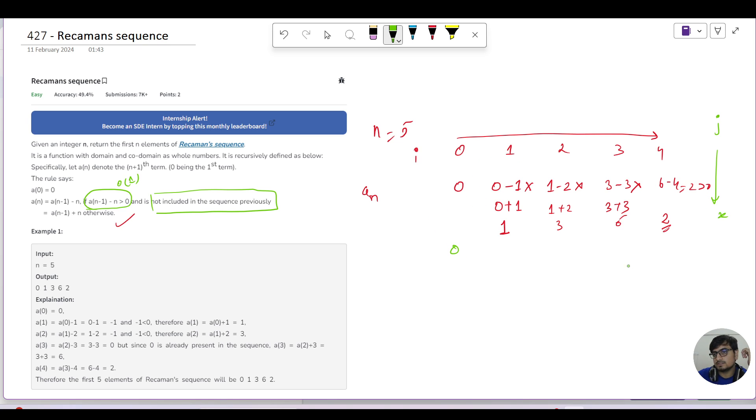I have to check from 0 to j-1 whether term x is present. If x is not present, then yes, you can use this point.